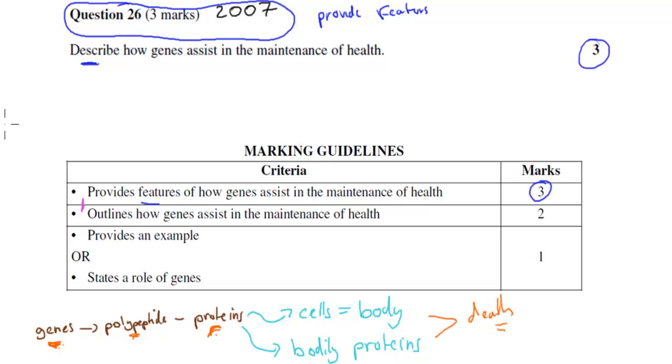So more or less what you have to do is briefly describe what genes do and what they are, and then how they link to health by enabling proteins to be built that are important for cells and for our body in general. That's what we have to do to get full marks.